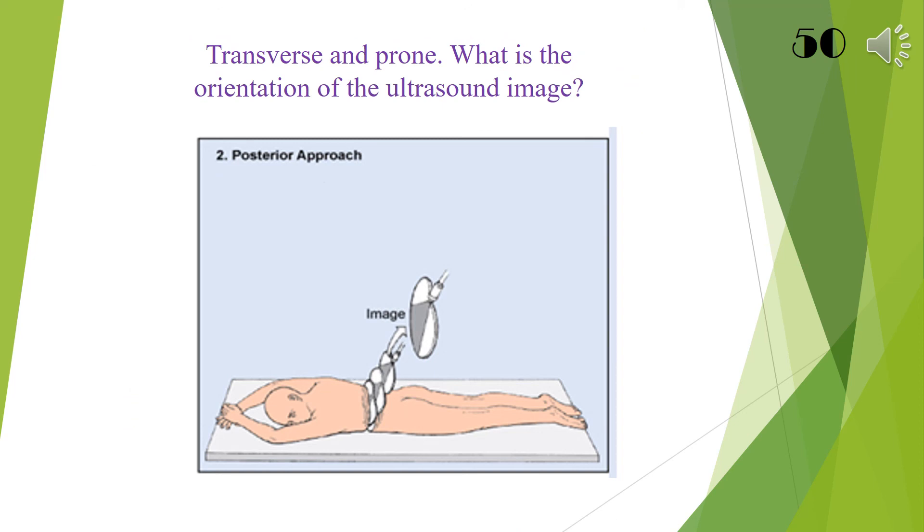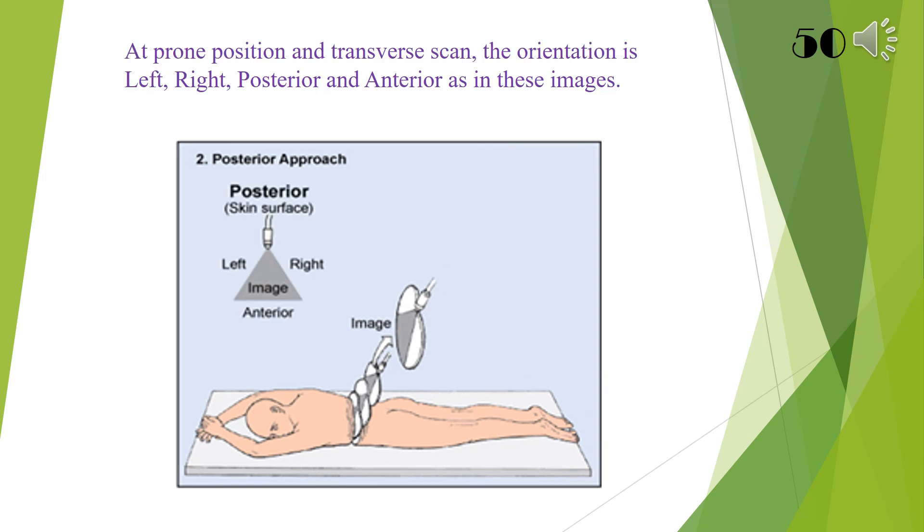Transverse scan at prone position, what is the orientation of the ultrasound image? At prone position and transverse scan, the orientation is left, right, posterior, and anterior as in these images.